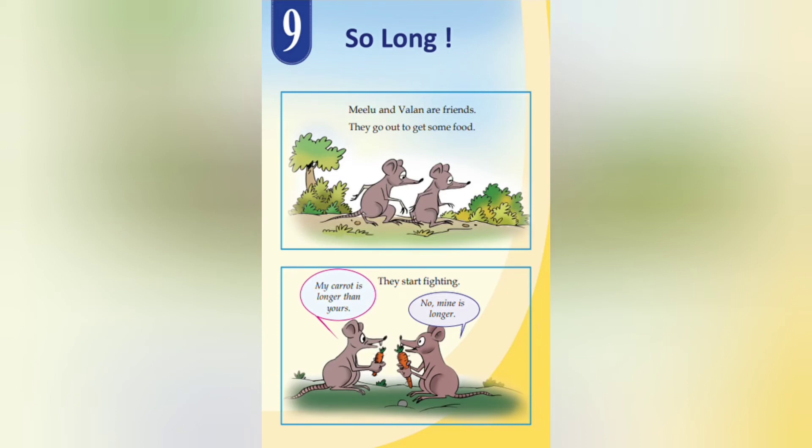Hello, welcome to Mathematics in the 9th chapter. My name is Milu and Wallen. Wallen are friends. They go out to get some food.